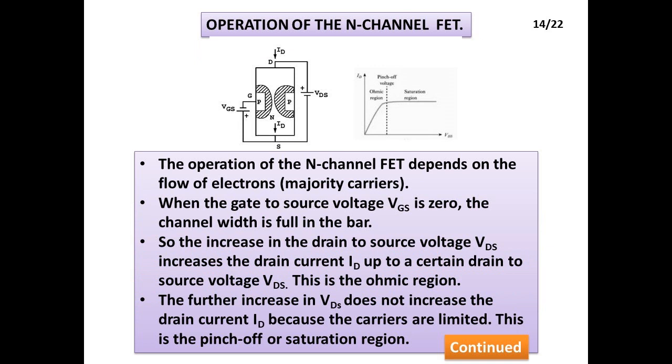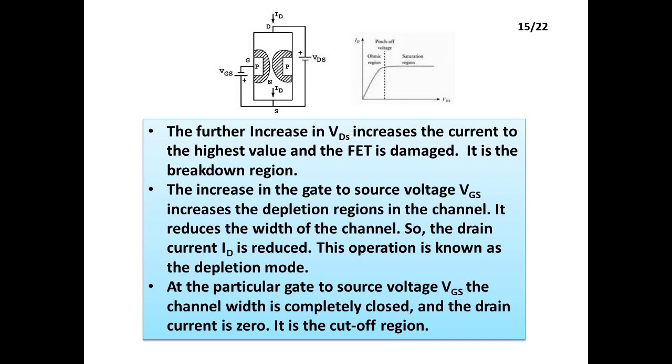Operation of the N-Channel FET: The operation depends on the flow of electrons, majority carriers. When the gate to source voltage VGS is zero, the channel width is full in the bar. So, the increase in the drain to source voltage VDS increases the drain current ID up to a certain voltage. This is the ohmic region. The further increase in VDS does not increase the drain current ID because the carriers are limited. This is the pinch-off or saturation region. The further increase in VDS increases the current to the highest value and the FET is damaged. It is the breakdown region.